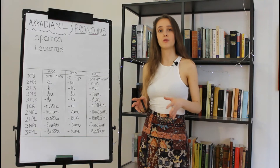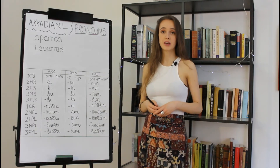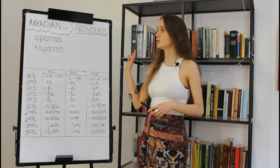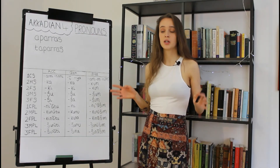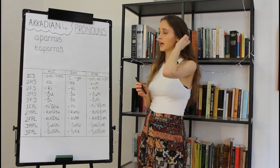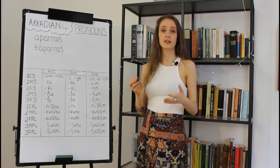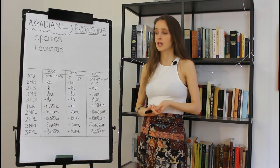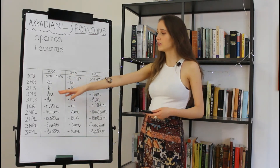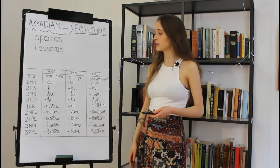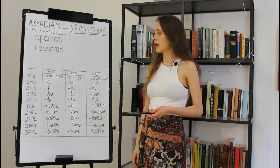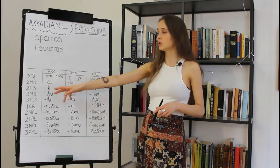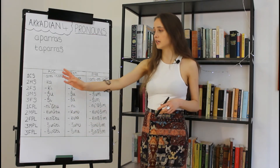So that covers our independent pronouns. We'll look at some examples from the cuneiform, but first I want to introduce the pronominal suffixes. As already mentioned, pronominal suffixes attach themselves onto the ends of verbs, nouns, and prepositions. The suffixing element is indicated by the hyphen at the beginning of each form in the paradigm. We have separate forms according to gender, number, and person, and three different cases: accusative, genitive, and dative.